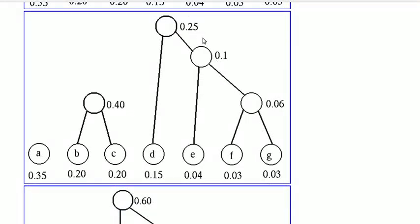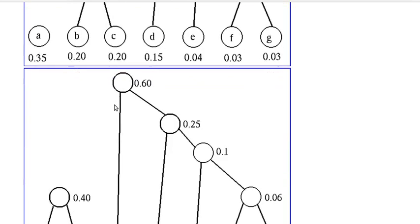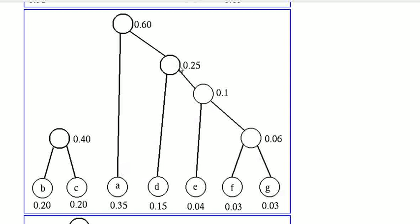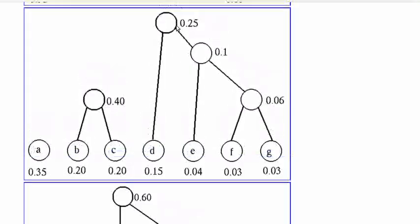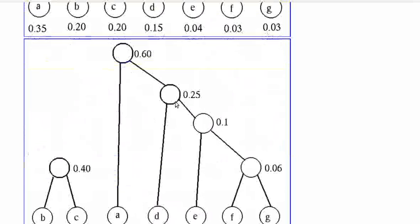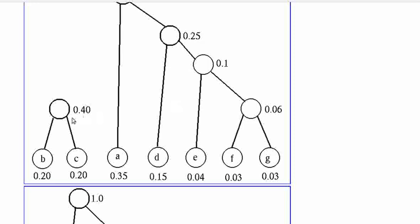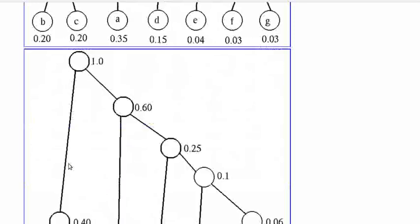After this, the lowest are 0.2 and 0.2. We merge them to get 0.4. Now the lowest are 0.25 and 0.35, so we merge them to get 0.60. Finally, we merge 0.40 and 0.60 to get 1.0.